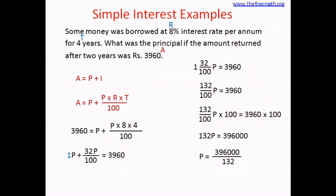Since 100 times 132 equals 13,200 and 32 times 3 equals 96, the answer of the division is 3,000. So P equals 3,000. That means the principal is 3,000 rupees — the money borrowed equals 3,000 rupees.